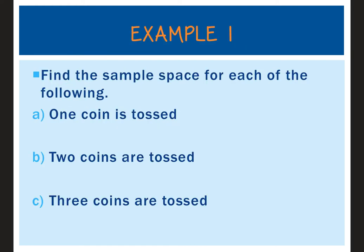Example 1: find the sample space for each of the following. One coin is tossed — the sample space is heads or tails. If two coins are tossed, you can get heads-heads, tails-tails, heads then tails, or tails then heads.